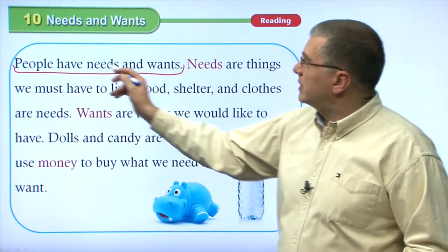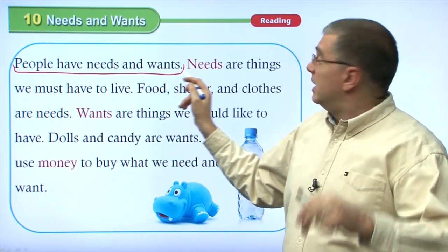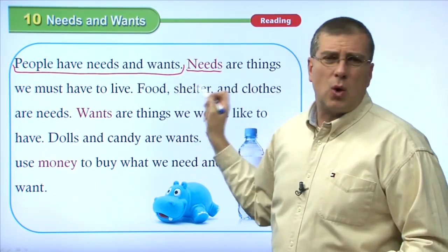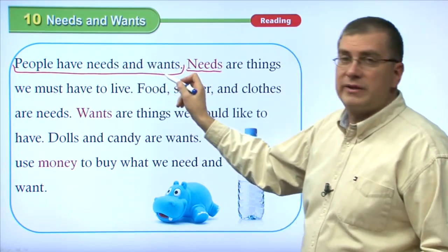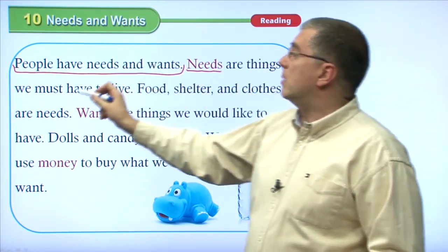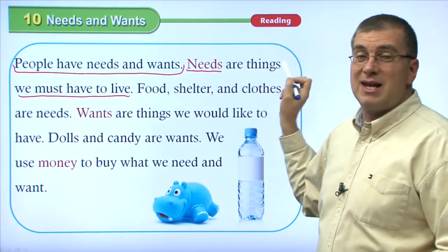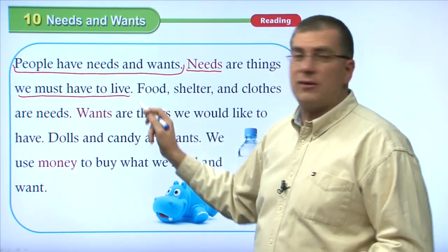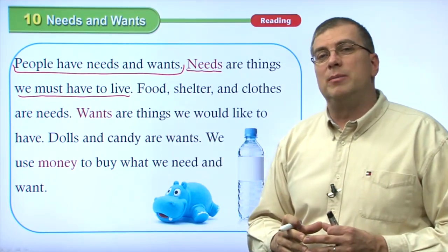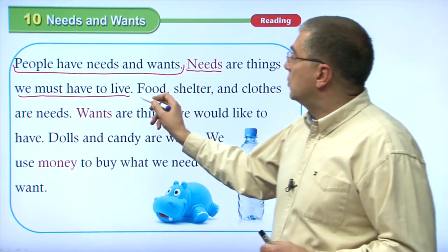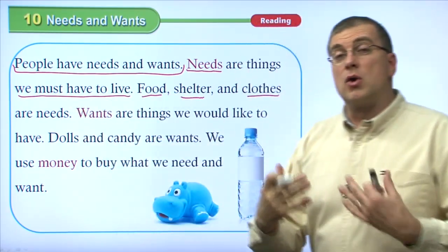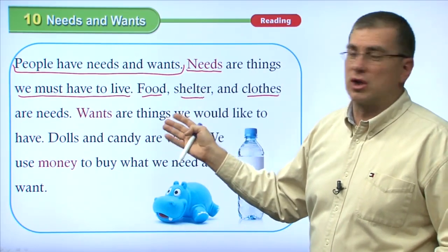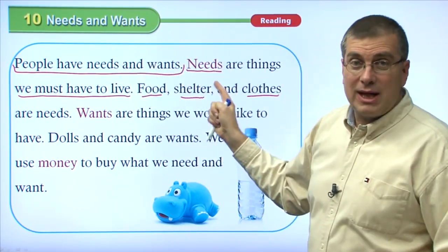Needs is first, wants is second — it's important to keep that order. 'Needs are things we must have to live.' This is a definition sentence that tells us what needs are. After this definition sentence, we expect examples. And that's what we have: 'Food, shelter, and clothes are needs.' Those are examples of needs. Very good passage construction — first state needs, define them, then give examples.